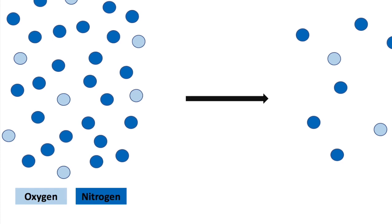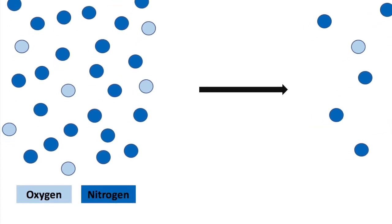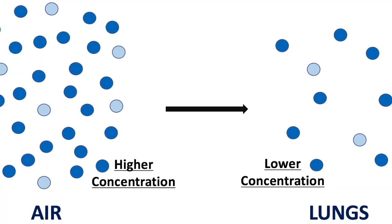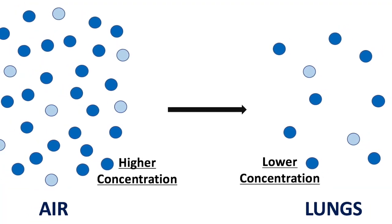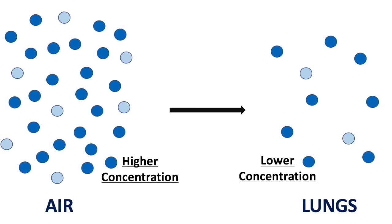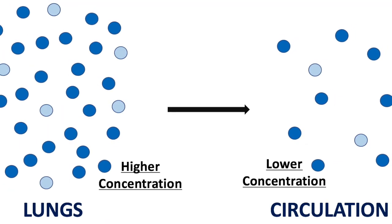That pressure creates a density of air. The oxygen and nitrogen, which are the primary gases in the air that we breathe, are kept condensed in a certain manner. When I breathe in, I draw that air in, and because the pressure of oxygen is greater in the atmosphere than it is in my circulation, the pressure gradient drives the oxygen from greater concentration to lower concentration — from the air into my lungs, and from my lungs into my circulation.